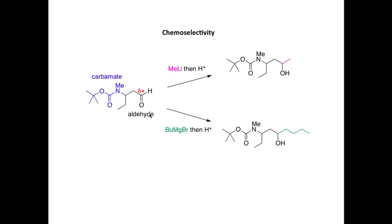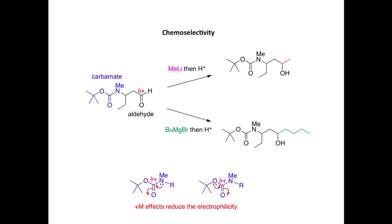Because we've got reaction solely at the aldehyde and not the carbamate, this is described as a chemoselective transformation. We can explain the chemoselectivity on the relative electrophilicity of the carbon atoms in the two different carbonyls. This aldehyde carbon is much more electrophilic than the carbamate carbon, because in a carbamate we have oxygen and nitrogen atoms which can donate electron density towards the carbonyl group, reducing the electrophilicity of the carbon atom.